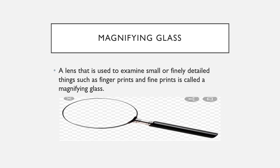A lens is used to examine small or finely detailed things, like fingerprints being tested, or fine print where words are written in very minute form. In such cases, a magnifying lens helps us see those tiny details clearly.